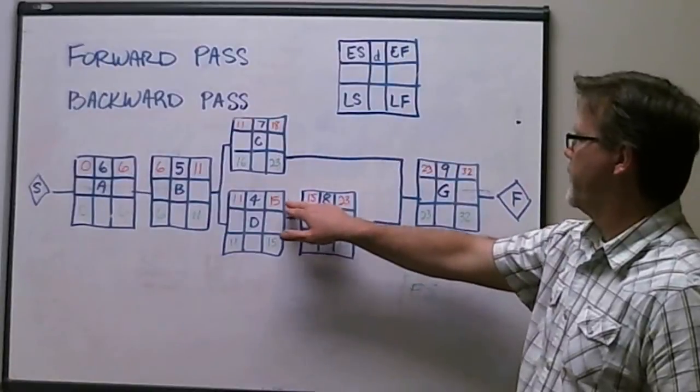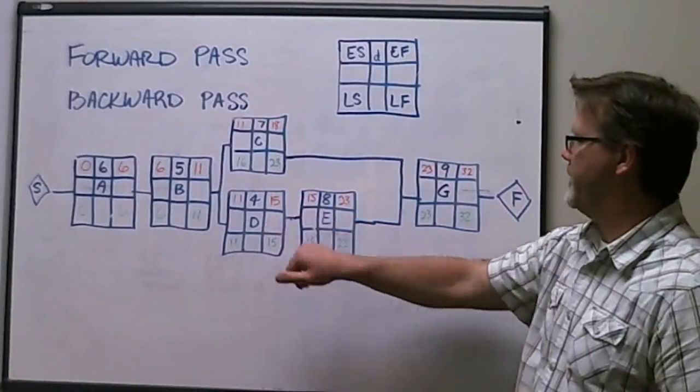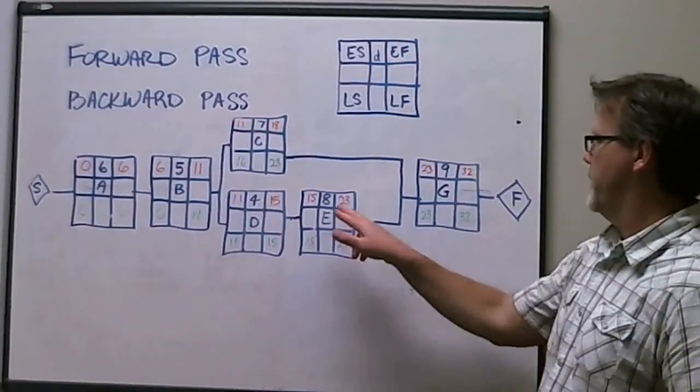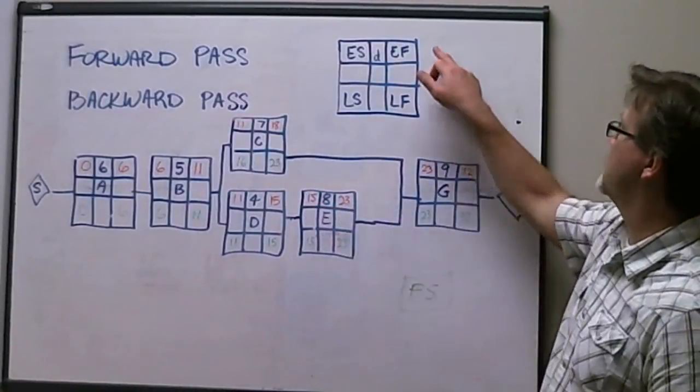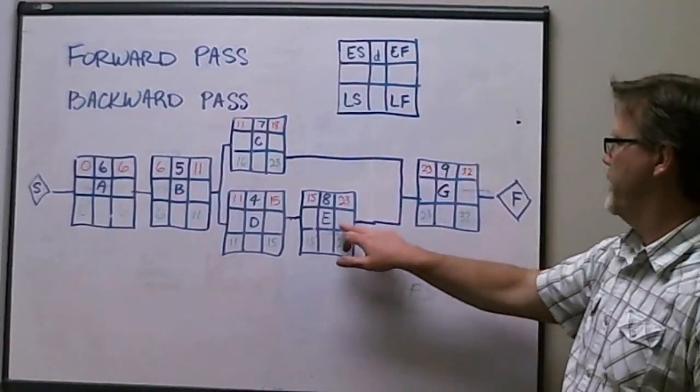We carry over 15, or day 15 from activity D, and activity E now may be able to start. Day 15 plus eight equals day 23, that is your early finish date for activity E.